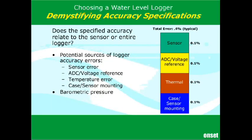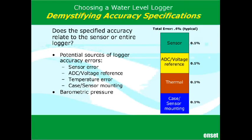Let's talk about specifications. Does the specified accuracy relate to the sensor or the entire logger? Oftentimes, when you review specification sheets, you'll find that the sheets talk about sensor accuracy instead of the whole logger accuracy. So it's important that you understand what you're reading and evaluating. There are additional errors beyond the sensor: case and sensor mounting errors, thermal errors, and logger circuitry errors. It's important to consider this whole pressure logger error when selecting your logger.